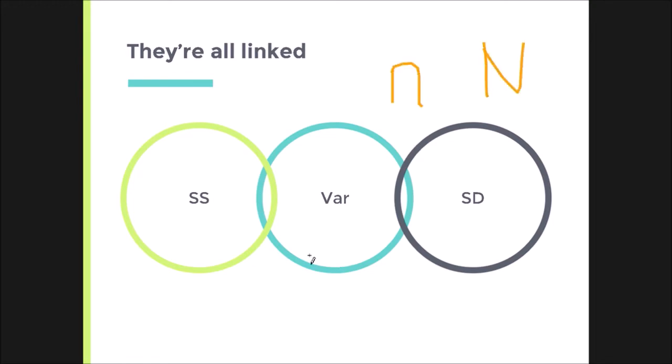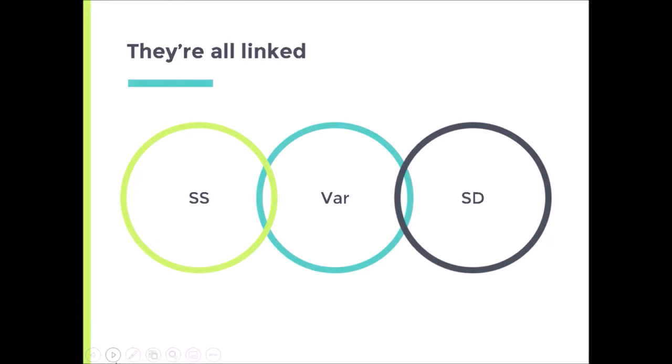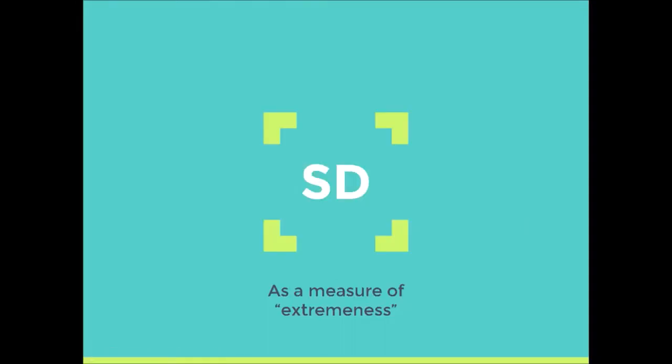Or the population size. As long as you have that, you can pop back and forth between these mathematically. So the standard deviation is useful because it's interpretable. But because it's so interpretable, it's often used as a measure of extremeness in statistics. When scores get extreme, we call them significant because they are unlikely to occur by chance, and therefore we infer that there must be something going on that makes that value so different.